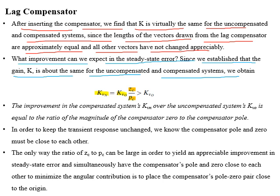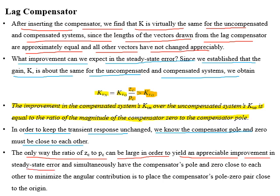The improvement in steady-state error corresponds to the ratio of the magnitude of the compensator zero to the compensator pole. Now, in order to keep the transient response unchanged, the compensator pole and zero must be close to each other, and the only way the ratio of compensator zero to pole can be large — to give appreciable improvement in steady-state error — while keeping them close to each other, is to place the compensator pole and zero near to the origin, to minimize the angular contribution.